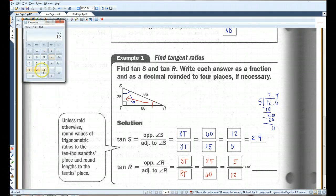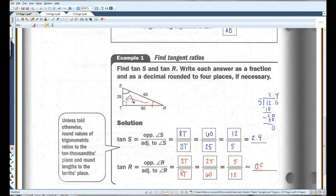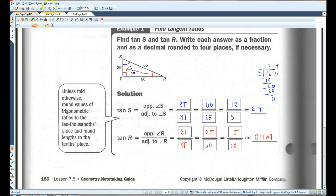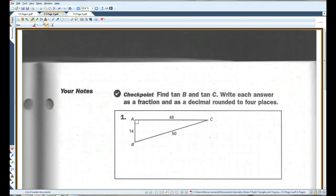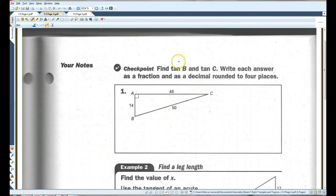And if we pull out the calculator, 5 divided by 12, 0.4167-ish. So we're going to change. Okay. Alright. Let's go on to page 2. I'll let you guys do this checkpoint.